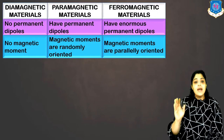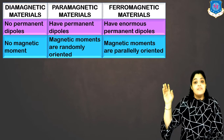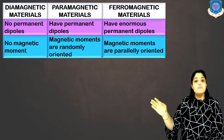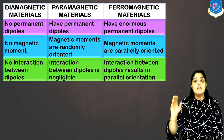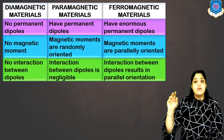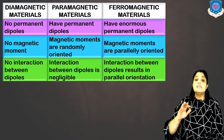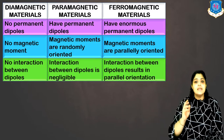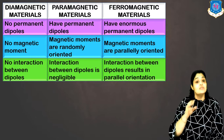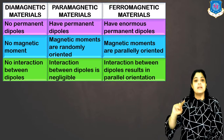Diamagnets do not have any magnetic moment. Paramagnets have magnetic moments which are randomly oriented. Ferromagnets have magnetic moments which are parallel to each other. Diamagnets do not have any dipole interaction. In paramagnets, the interaction between dipoles is negligible. But in ferromagnets, the interaction between dipoles is so strong that it leads to a parallel orientation giving permanent magnetism.